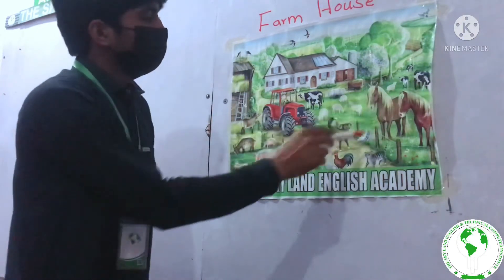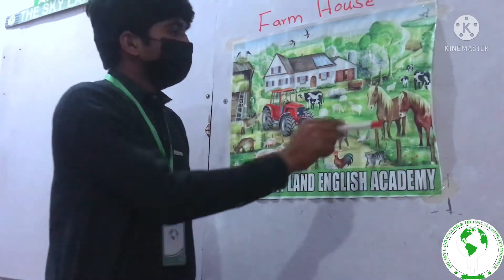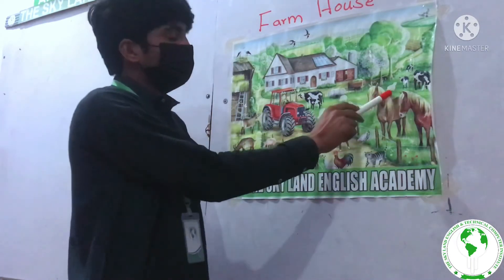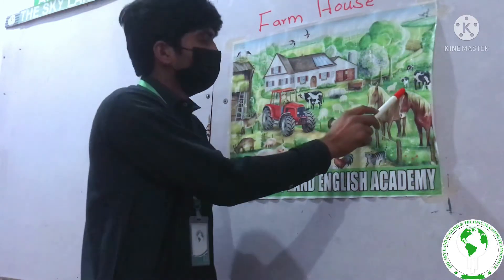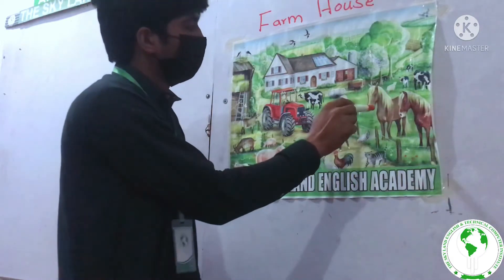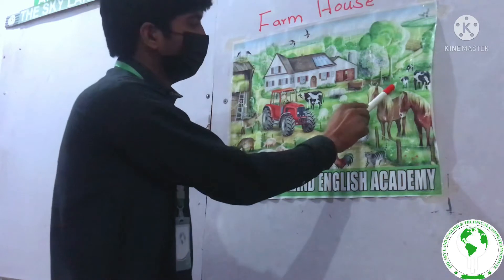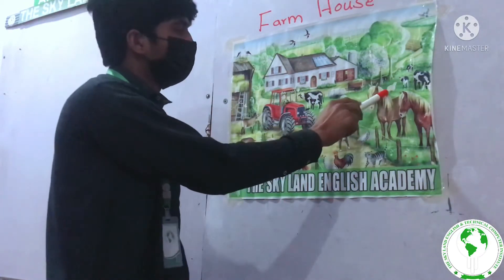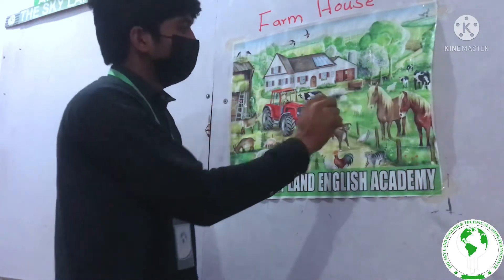This is a cow, and the cow color consists of multiple colors — like white color, black color, and pink color. This cow is eating the grass. This is a sheep, and this color also consists of two colors — like white color, and the eye color is black.